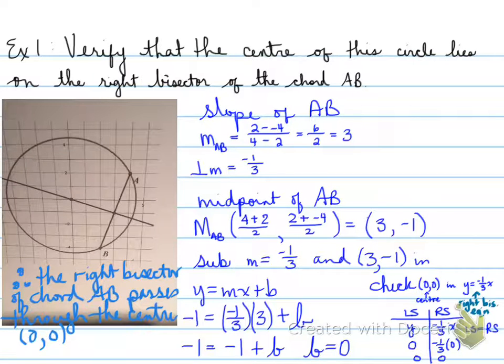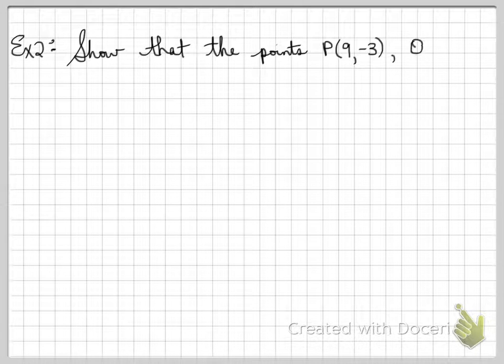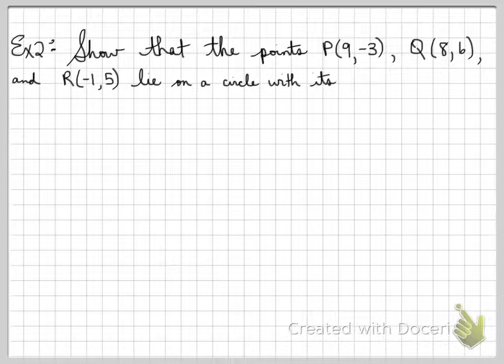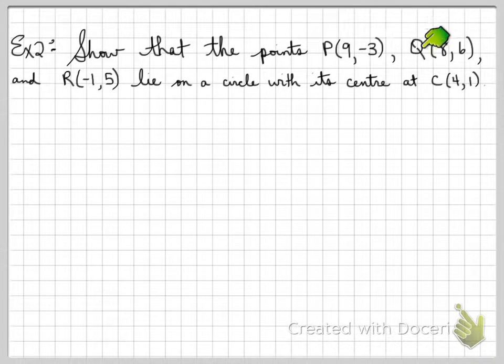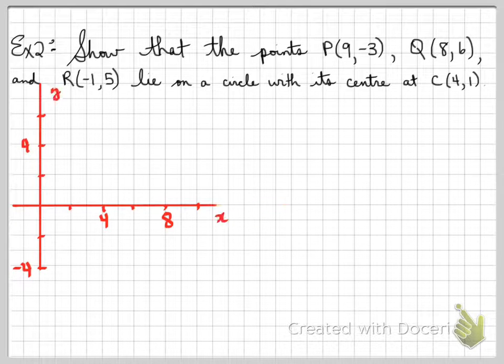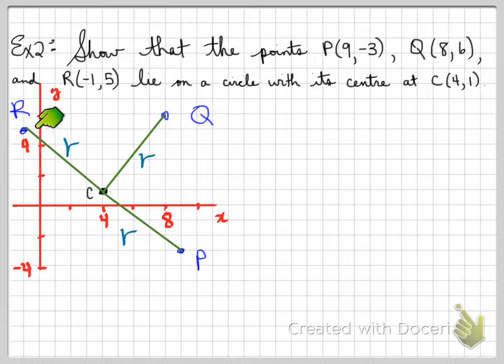All right, let's move on to the next one. Example number 2. Show that the points P, Q, and R lie on the circle with its center at C. So we need to know that these three have a center at 4, 1. How are we going to do that? Well, we have a circle. We know that the three points lie on the same circle. So these three points will have this center C. We need to find the value of this center C. How can we do that? Well, we know that the distance from C to R, C to Q, and C to P are all equal distance apart.